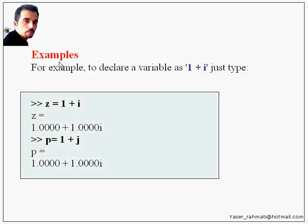Let's take an example. For example, to declare a variable as 1 plus I, just type Z equal 1 plus I. By typing this code, you can get the answer of Z as 1 plus 1I. Again, instead of typing I, type J to declare a complex number with the name of P. P equal 1 plus J. Again, as you can see, you can get this answer. This is the same as this one.